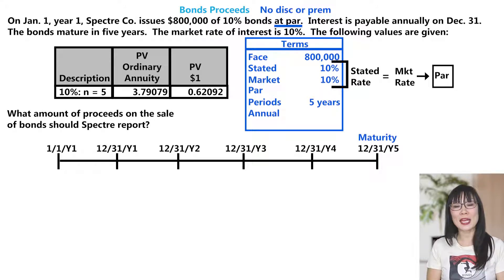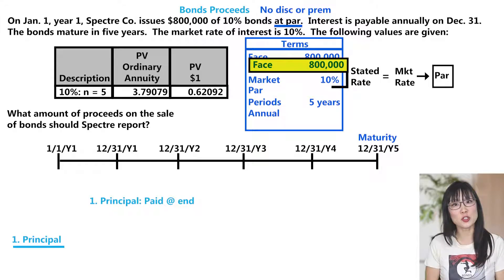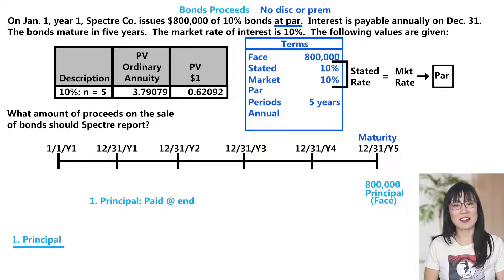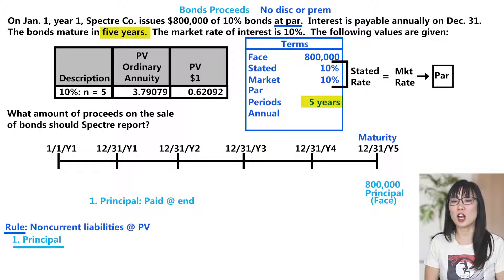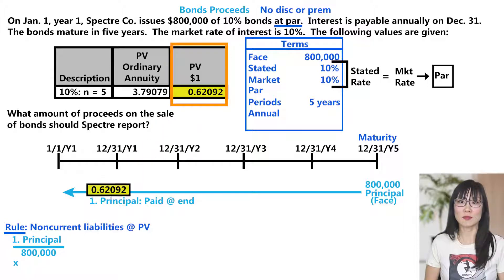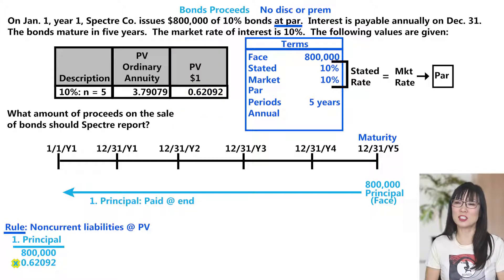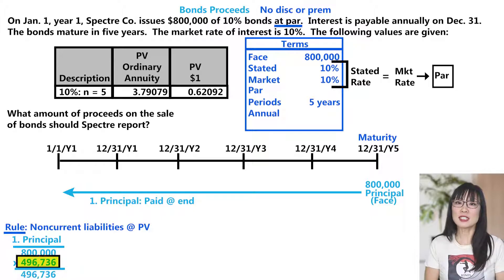Remember bonds have two cash streams. The first cash stream is the principal — the amount borrowed — it gets paid back at the end, at the maturity date. Here the principal borrowed is $800,000 and it's for five years, making these bonds non-current liabilities. Just like other non-current liabilities, these bonds must be recorded at present value. To calculate the present value of $800,000, we multiply $800,000 by the present value factor of one dollar — we use the one dollar factor because it's only paid once at maturity. $800,000 × 0.62092 = $496,736.